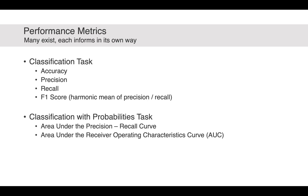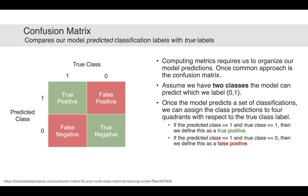There are many different kinds of performance metrics and they each provide information in their own way. There are some metrics that are used in classification tasks and others that are used when your model is outputting a probability instead of a classification. In order to compute our performance metrics we need to organize our model predictions. One common approach is to use a confusion matrix, which helps us count and see how our model is classifying data. Assuming we have a model classifying data into two classes with a label of zero or one, once the model makes predictions we can assign them to four quadrants in the confusion matrix.